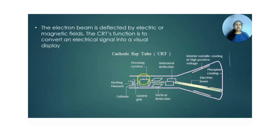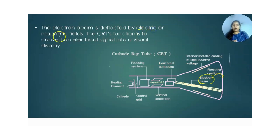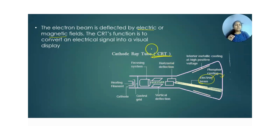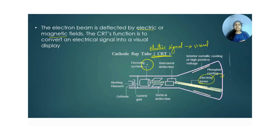In this CRT, the electron beam is deflected onto the phosphorescent screen either by an electric field or by a magnetic field. The function of the cathode ray tube is to convert electric signals into visuals.